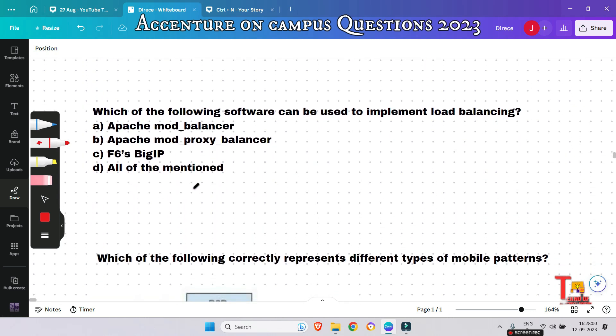The next question is: Which of the following software can be used to implement load balancing? Apache mod_balancer, Apache mod_proxy_balancer, F5 Big-IP, or all of the mentioned? Let me answer that - option B will be correct: Apache mod_proxy_balancer. Load balancing can be used to increase utilization and throughput, lower latency, reduce response time, and avoid system overload.